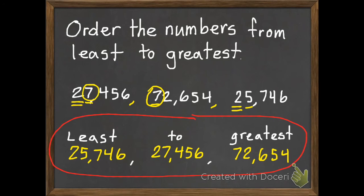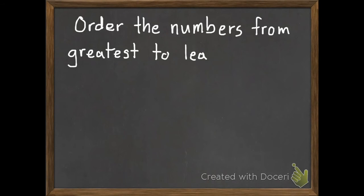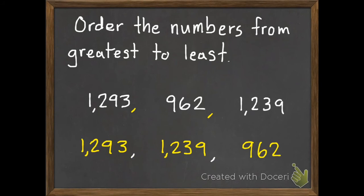Now I have two for you to try and to check. Here's your first practice problem. Order the numbers from greatest to least. Your three numbers are 1,293, 962, and 1,239. Pause this and unpause it to check your work. Okay. The greatest is 1,293, middle is 1,239, and the least is 962.